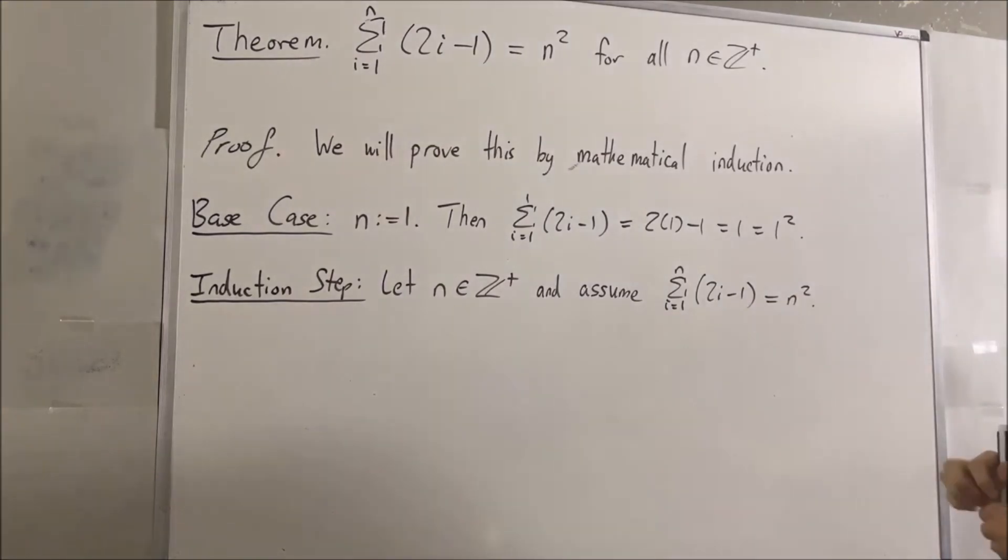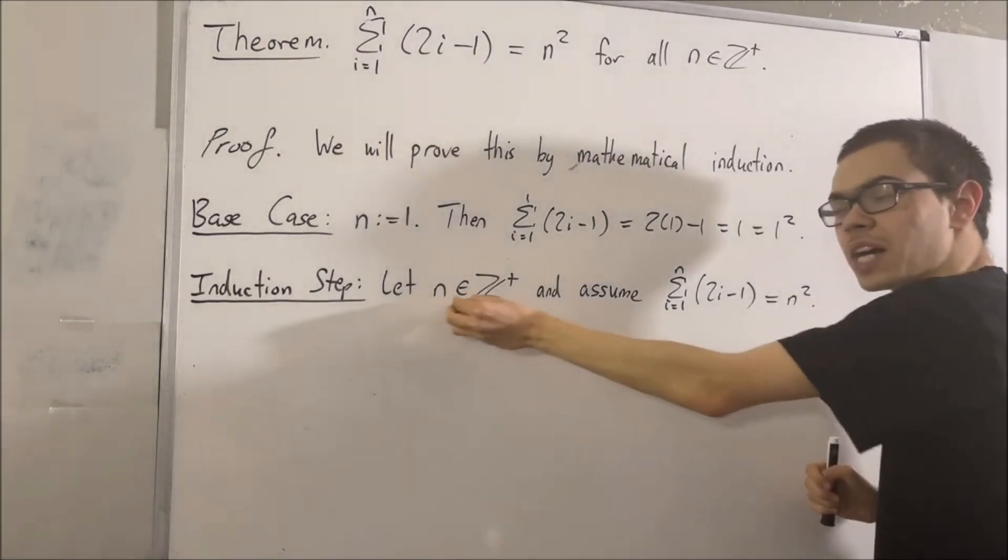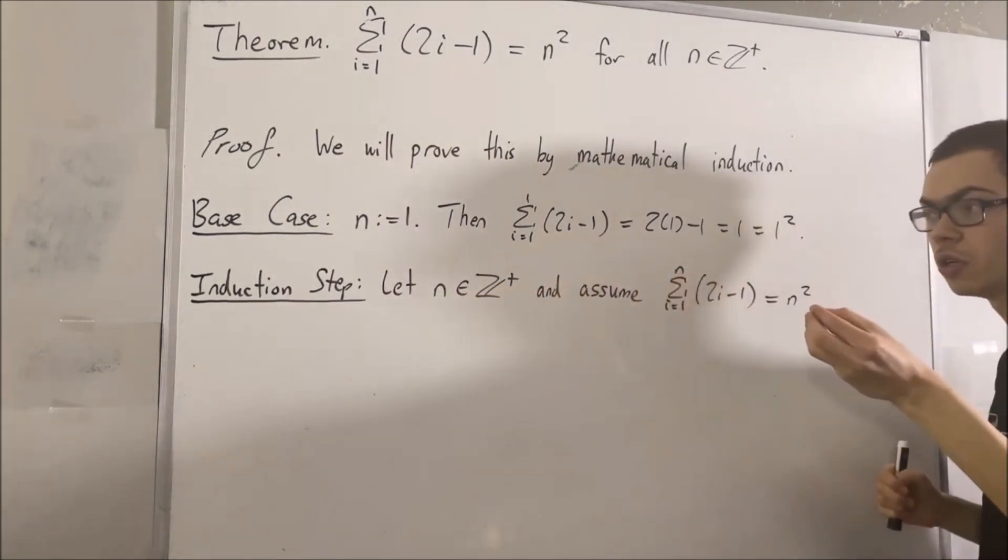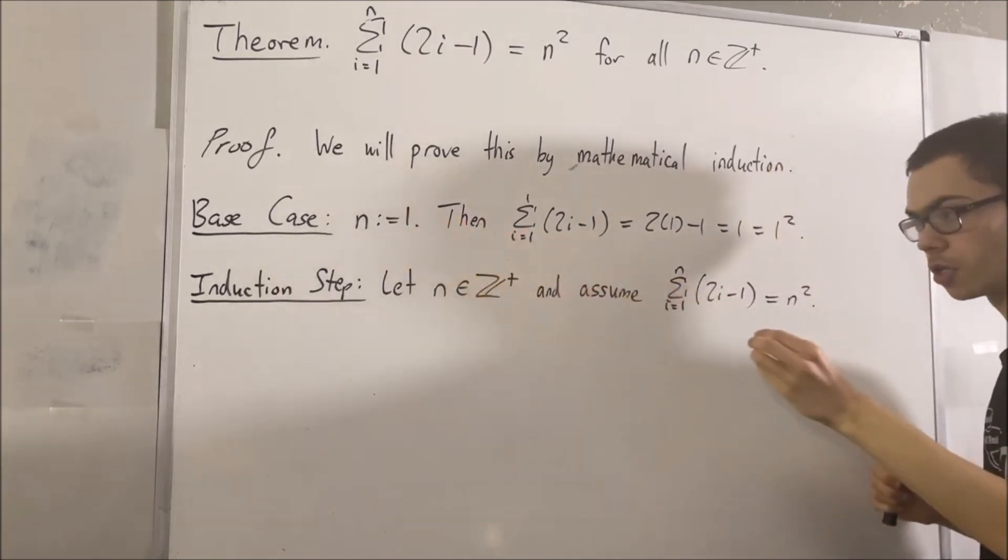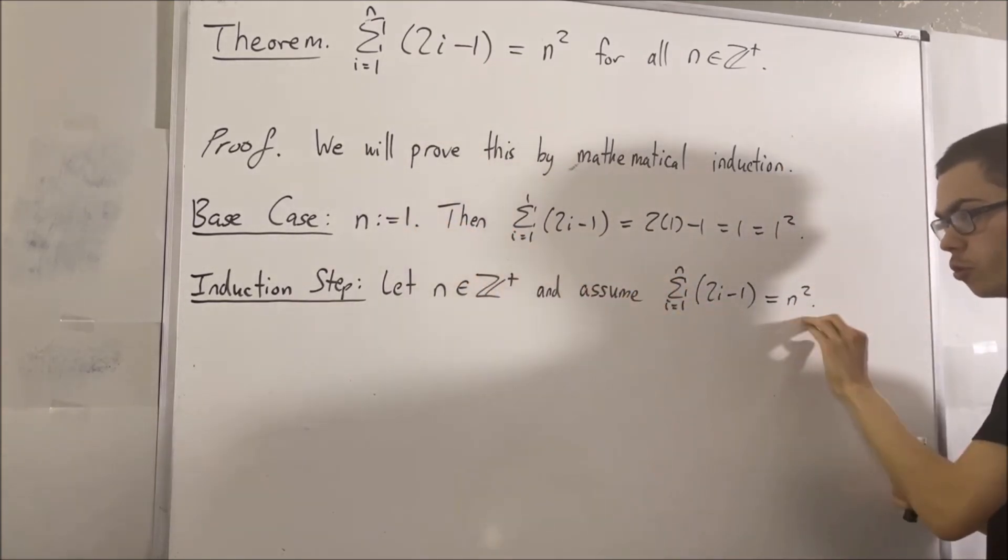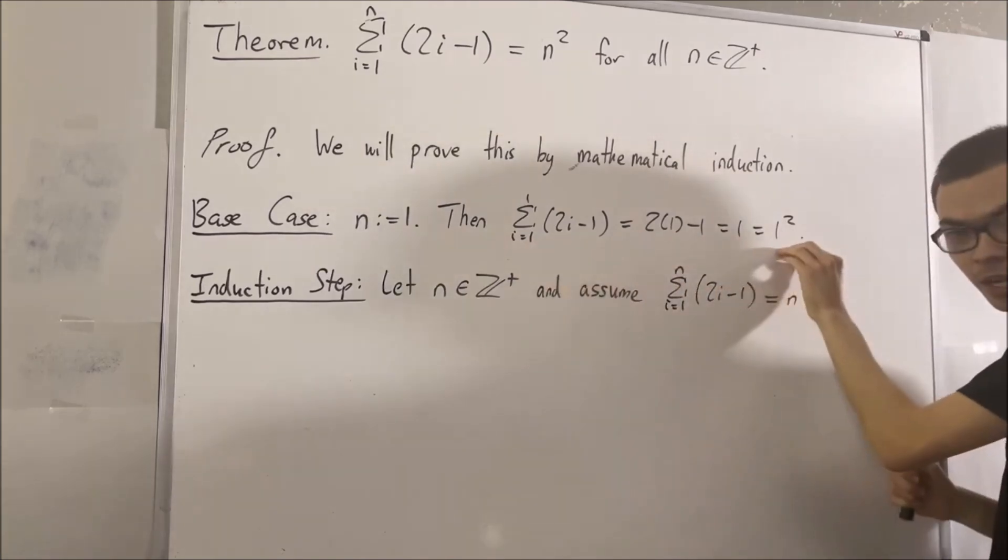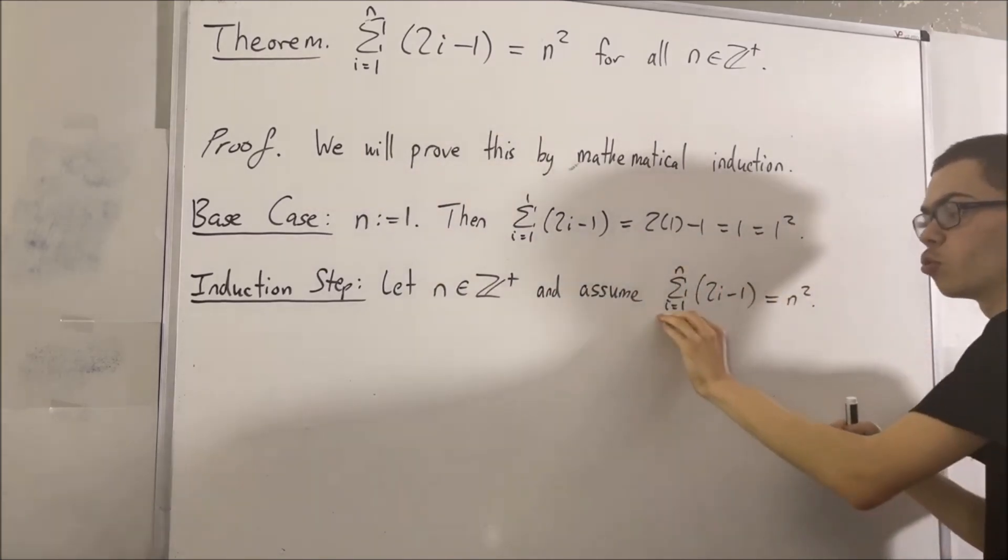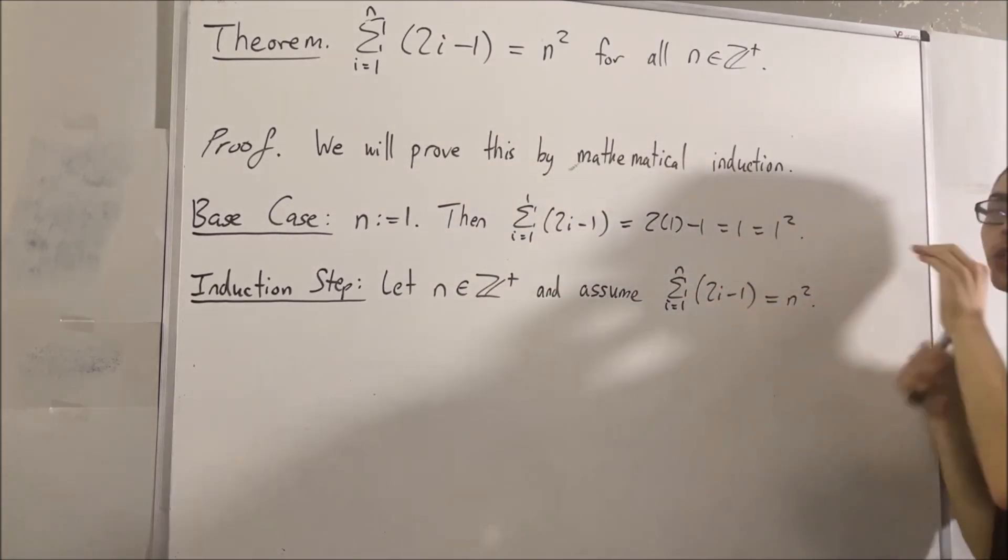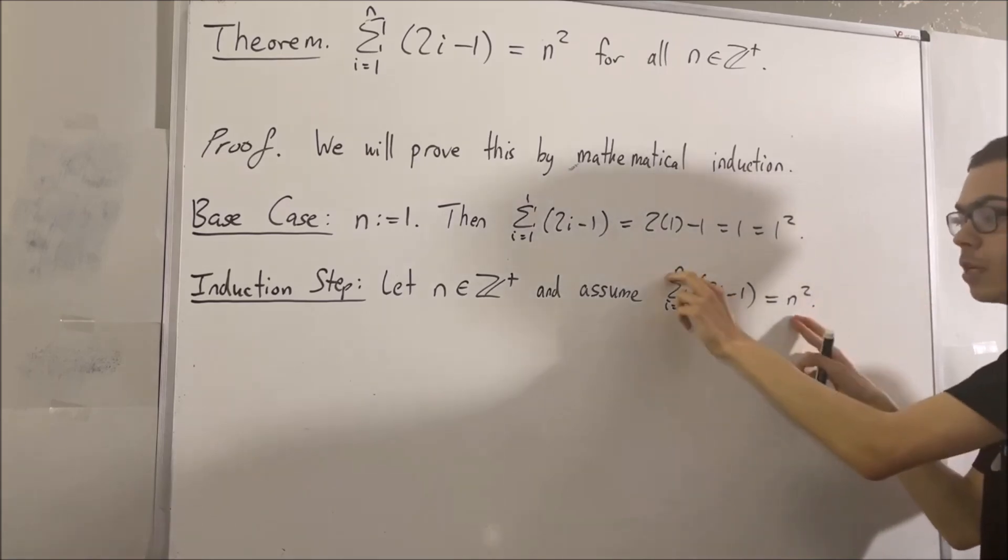Right? So for instance, maybe this arbitrary positive integer that we picked out was 1. So assuming that this is true is correct. But now what we want to do is we want to prove that this same statement is true if instead we have n plus 1.